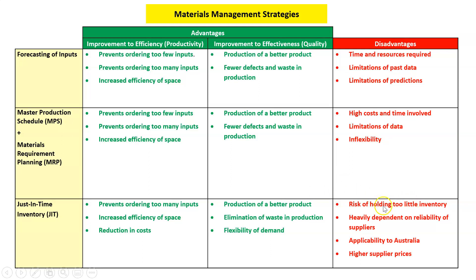The disadvantages of JIT are very relevant right now — as seen during COVID. You run out of inventory when you can't get it, like computer chips and shoes. We ran too lean, too much just-in-time, and we're too dependent on the reliability of suppliers. It's also difficult to apply in Australia versus Japan — we're a big country, things don't get here as easily, and we're very isolated. Also, because we're not buying in bulk, suppliers might increase their prices for smaller orders.